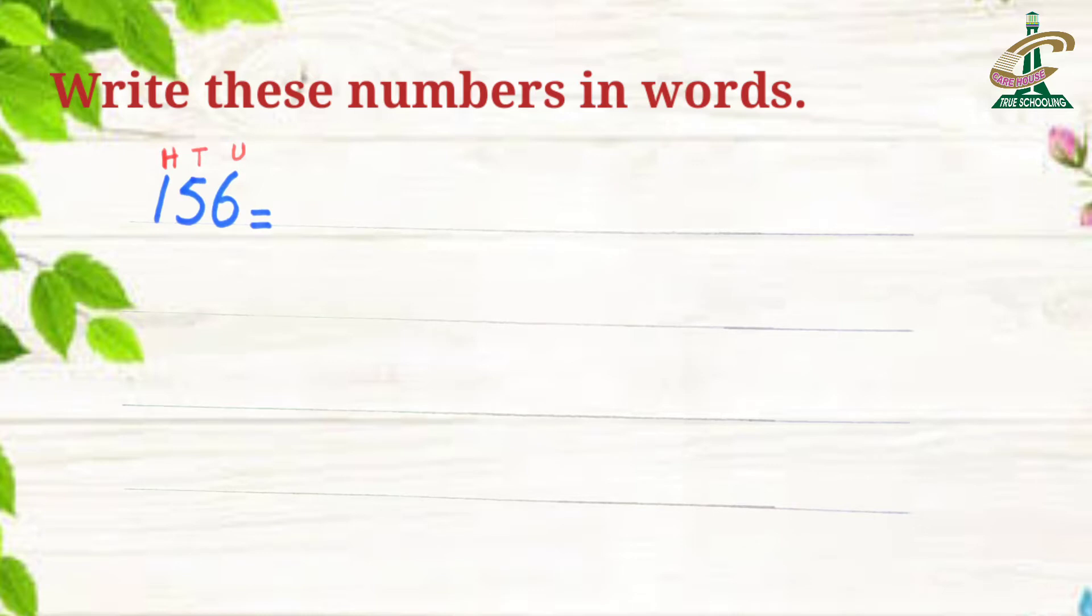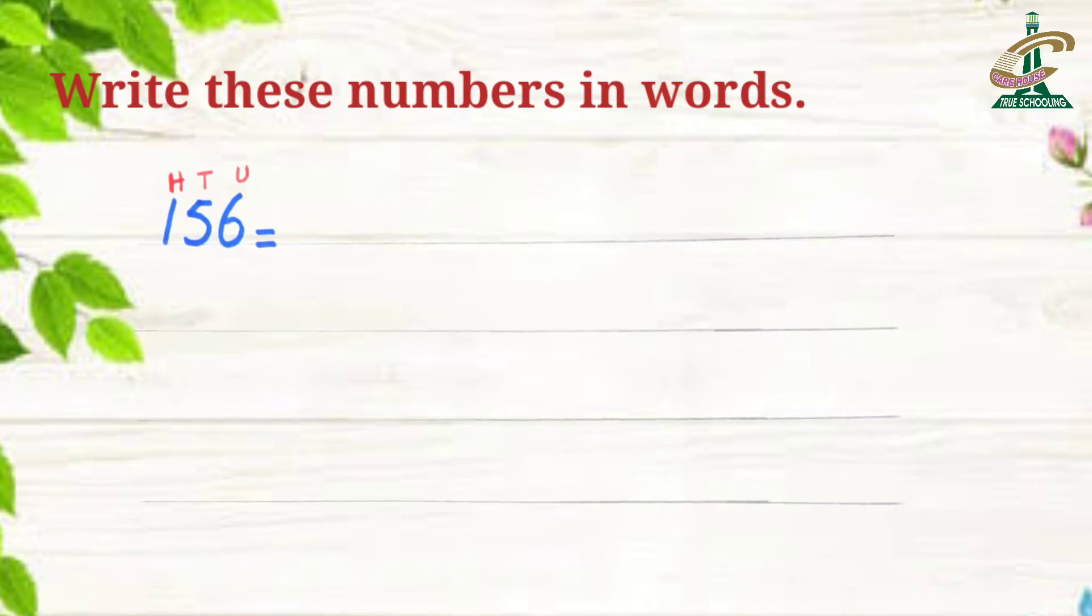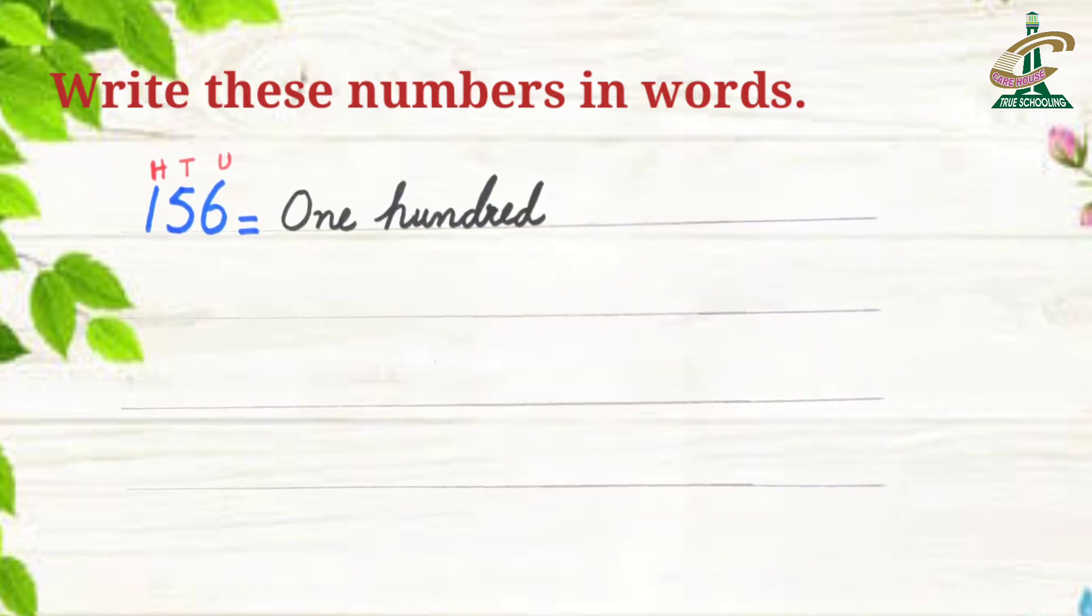Now, we will write in words. We will start from left hand side. Left hand side per kya hai? One. One ki place kya hai? Hundred. How we can read? One hundred. Now, we will write hundreds. Now, we can read units and tens together like 56.